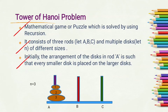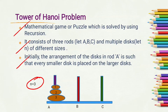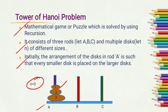Initially, the arrangement of the disks on rod A is such that every smaller disk is placed on the larger disk. As you can see here, we have three disks and three rods, and initially the disks of different sizes are placed on rod A, with each smaller disk always placed over the larger disk.